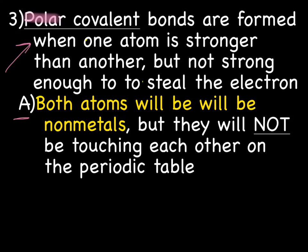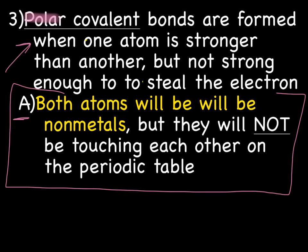And we'll talk later about what that means for a molecule or a covalent compound when it's polar. But for now, just know that they're sharing electrons, but not quite evenly. Now, when you have a polar covalent bond, both atoms are going to be non-metals. But they will not be touching each other on the periodic table.